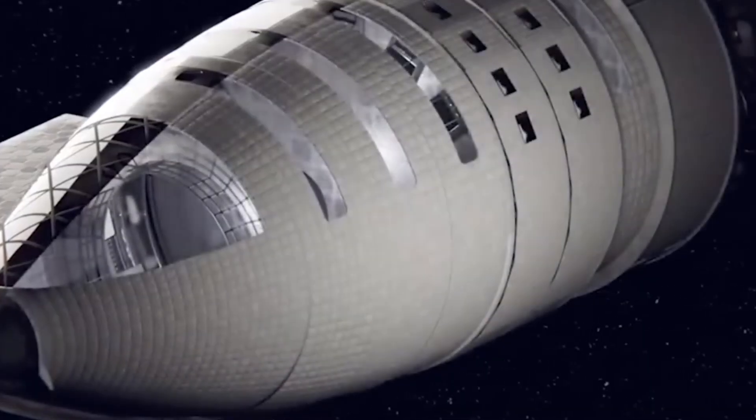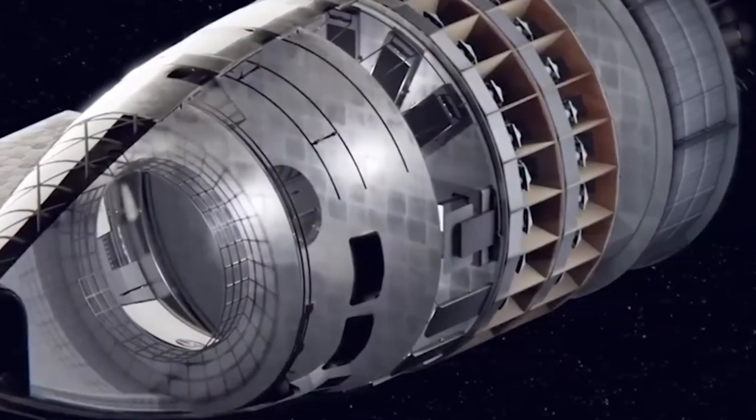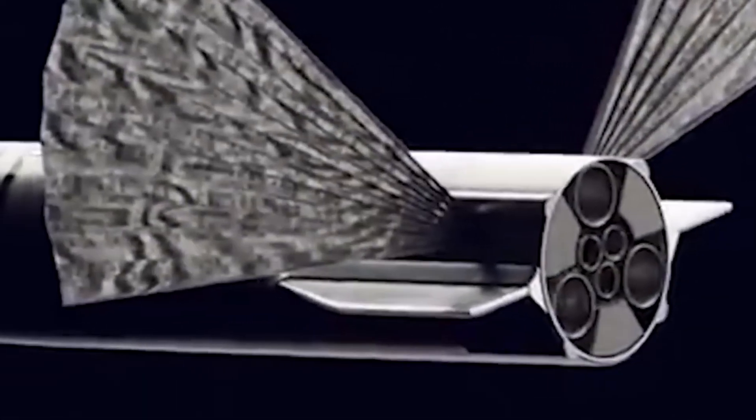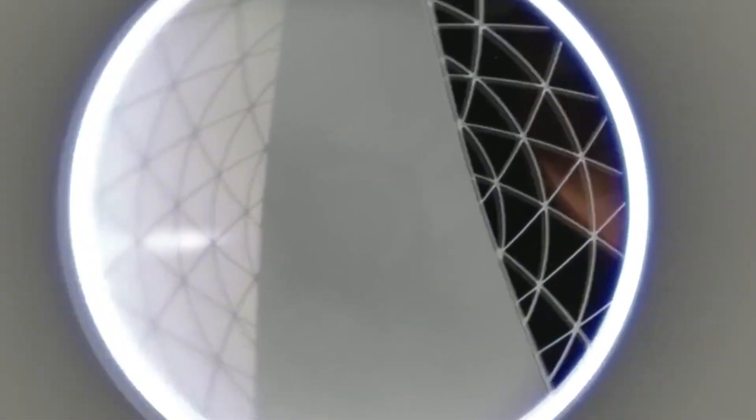Every part of the Starship, both upper and lower segments, are designed to power themselves safely back to Earth for a soft landing so that they can be reused. This approach is not only cost-effective, but it also brings us a step closer to a sustainable future in space exploration.